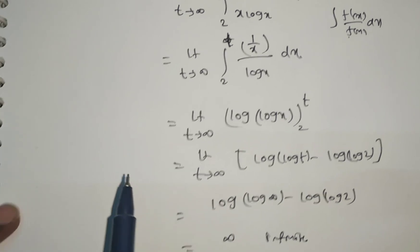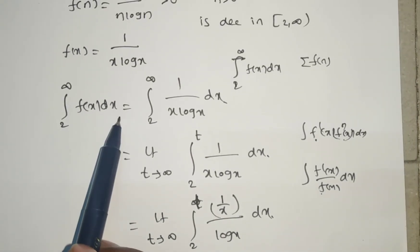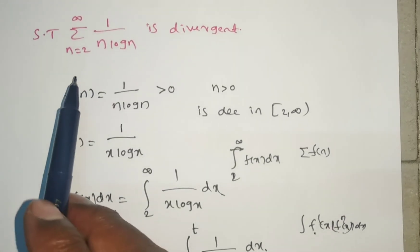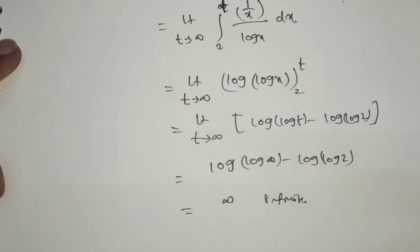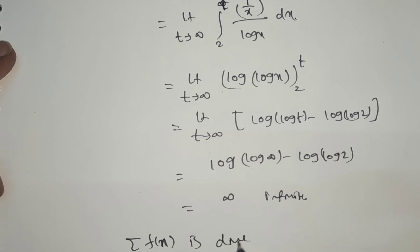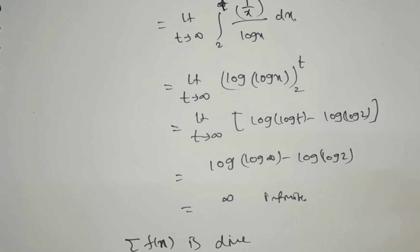So the integral from 2 to infinite of f of x dx is infinite. Since the limit is infinite, the given series is divergent. Therefore, by the integral test, summation f of n — that is, summation 1 by n log n — is divergent.